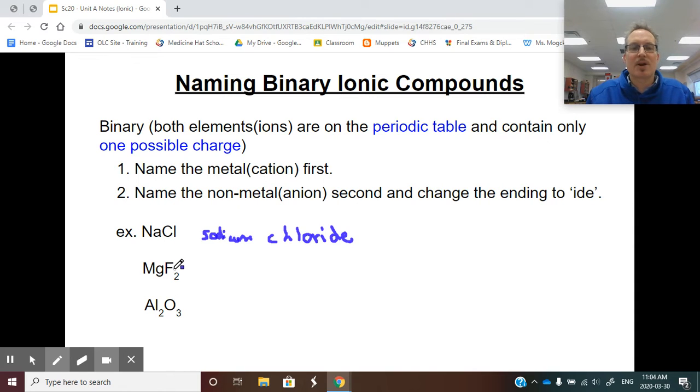Put our fingers on it. Mg has only one possible charge. It's a two positive charge, but it's still only one possible. So we're going to name it, name it -ide. Magnesium fluoride. And the last one, put your finger on Al and put your finger on O. Al is aluminum. Aluminum has only one possible charge. It's three positive. So we're just going to name it, name it -ide. Aluminum oxide.